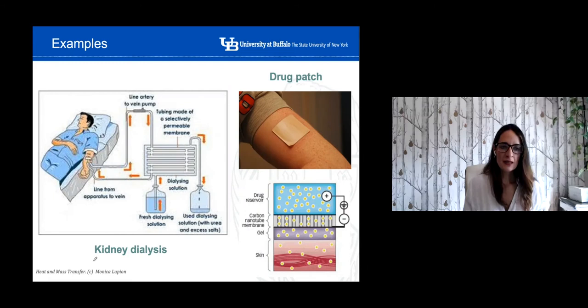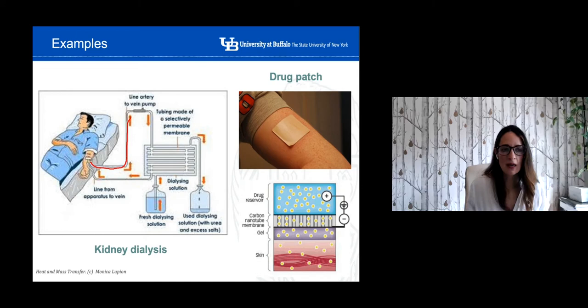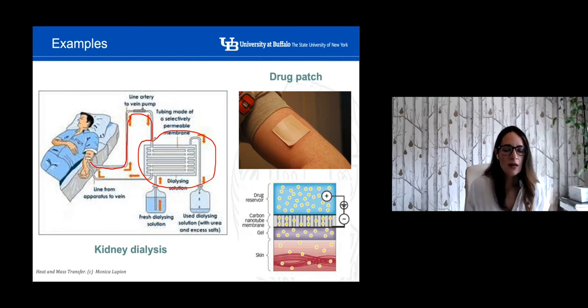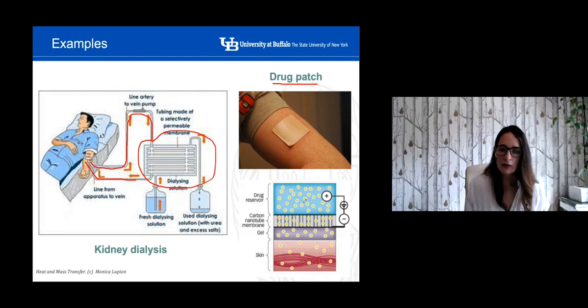Here are two typical examples of mass transfer applied to biomedical processes. In hemodialysis, when there is an issue with your kidney, blood with impurities is taken through equipment where those impurities are removed via mass transfer — and the purified blood gets back to the body. For drug delivery via a patch, when the patch is placed in contact with the skin, mass transfer occurs from the drug reservoir through the skin and into our bloodstream.